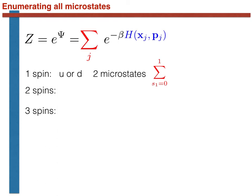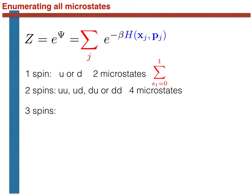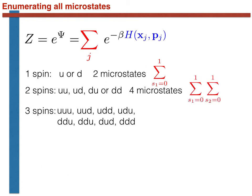Now suppose that we have two spins. The system can be in one of four states: up-up, up-down, down-up, or down-down. Remember that the up-down microstate differs from the down-up microstate as the spins are on a lattice. There are thus four possible microstates, and we can sum over these four microstates by performing the double sum over two individual spin variables shown here.